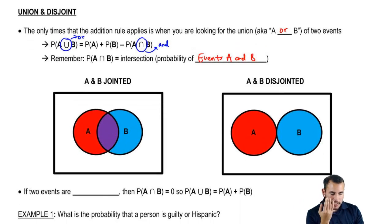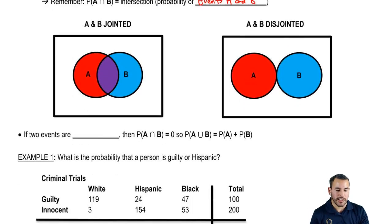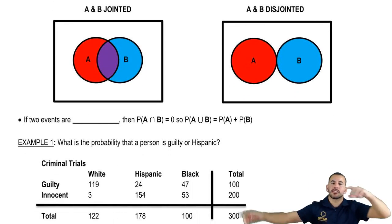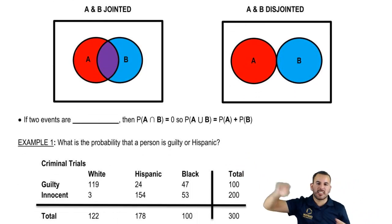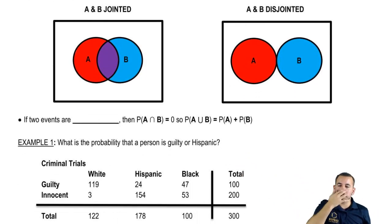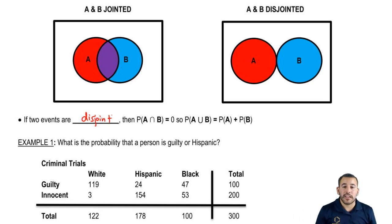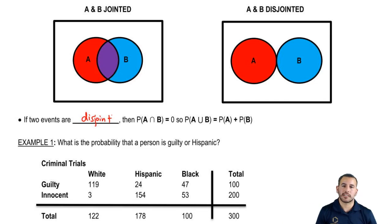So now let's look at the differences between jointed and disjointed problems. Jointed — you have some intersection. Disjointed — you don't. So if two events are disjoint, then the probability of A and B — the upside down u — equals zero.